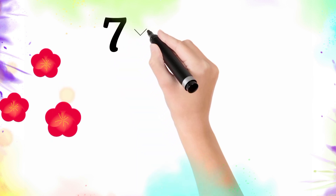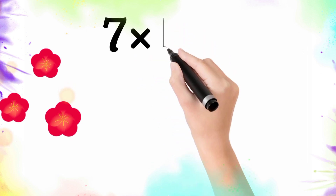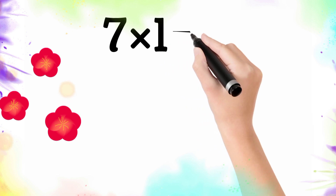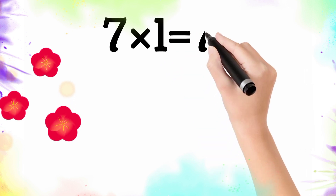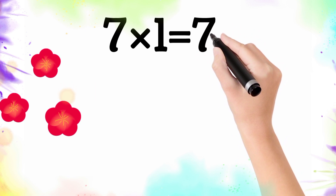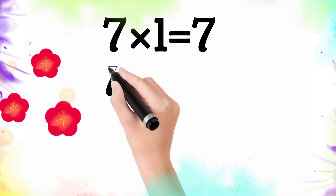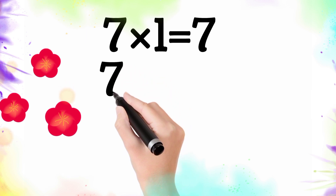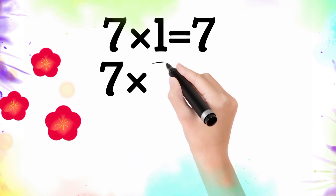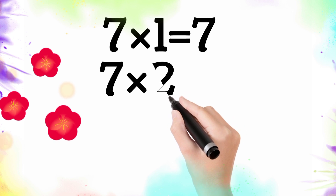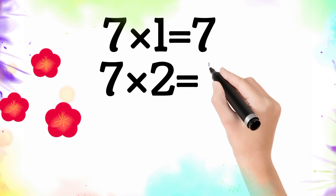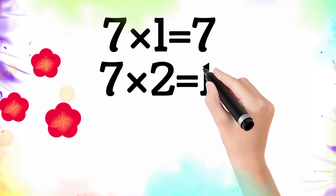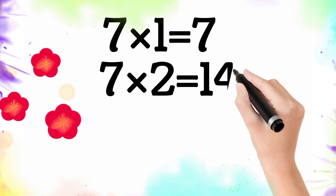Seven multiply by one is equal seven. So seven one the seven. Seven multiply by two is equal fourteen. So seven two the fourteen.